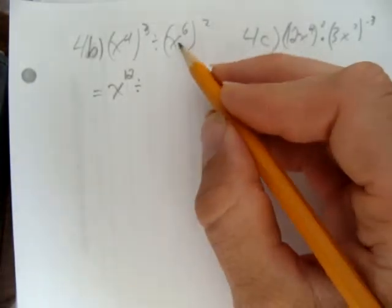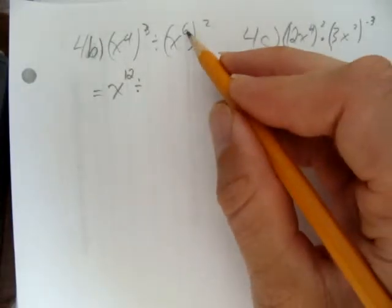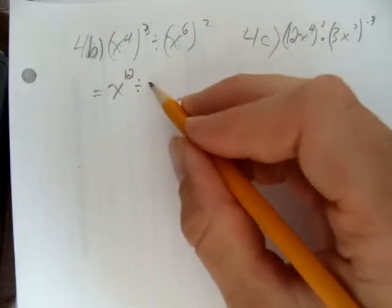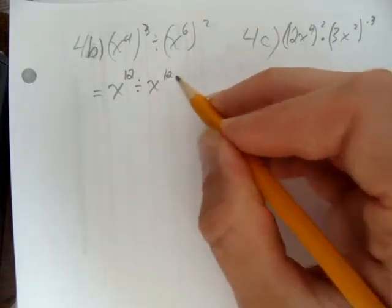We'll do the same thing with the other terms. Here we have x to the power of 6 to the power of 2, multiply the exponents, we get x to the power of 12.